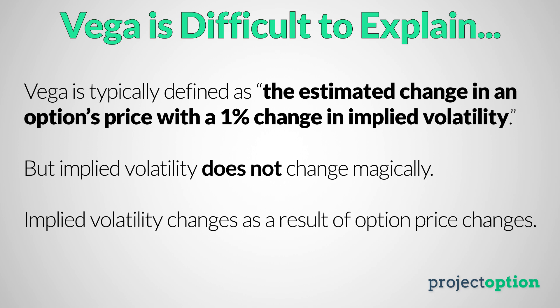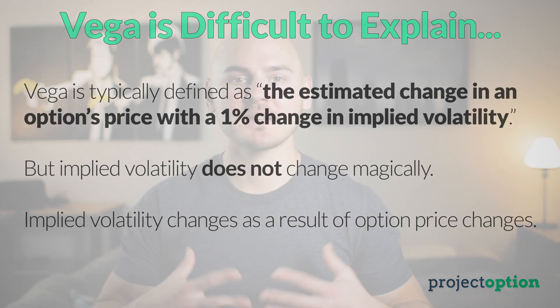So for implied volatility to change, the stock's option prices have to change first, and for that to happen, buying and selling pressure in the market has to shift so that the option prices become more expensive or become cheaper. Based on how much time those options have until expiration, a change in their prices will alter the level of implied volatility that is currently observed in that stock.